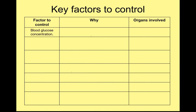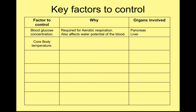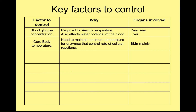Glucose is required for aerobic respiration and also affects the water potential of the blood. Key organs involved are the intestines, where you absorb sugar from your diet, but the pancreas and liver are really important in controlling glucose levels — and we'll look at that in later lessons, as are your muscles. Core body temperature is important because it's all about enzymes — maintaining the optimum temperature for enzymes that control the rate of reactions in your cells. The key organ involved in controlling body temperature is your skin, with your brain coordinating information, and muscles involved too.